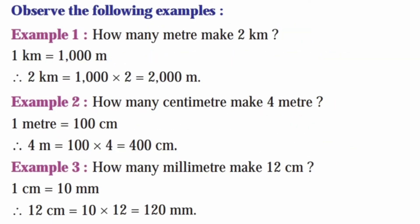Observe the following examples. Example 1: How many meters make 2 kilometers? We know that 1 kilometer is equal to 1000 meters. So, 2 kilometers equals 1000 into 2, which is 2000 meters. Example 2: How many centimeters make 4 meters? 1 meter is equal to 100 centimeters. So, 4 meters equals 100 into 4, which is 400 centimeters.